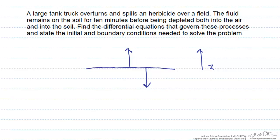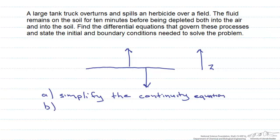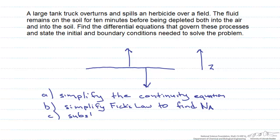So the concentration of herbicide is going to change with respect to time. Our plan for both situations is the same: first, simplify the continuity equation in Cartesian coordinates. Next, simplify Fick's law to find the flux N_A, where A is the herbicide. Then substitute that expression for N_A into the continuity equation, allowing us to state it in terms of the concentration of A instead of the flux.